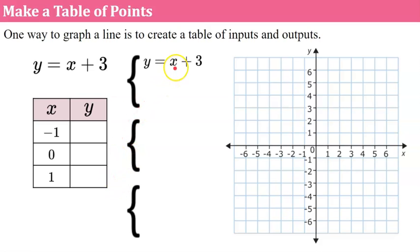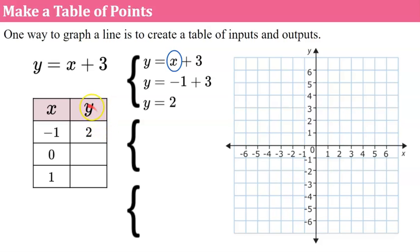We start with our equation and identify that we are putting in the input for x. We replace x with negative 1 and solve for y. When x is negative 1, negative 1 plus 3 is 2. So the corresponding value for y is 2. If you input x to be negative 1, the output is 2 — this is an ordered pair we will graph in a minute. Now we start with our equation again and put in 0 for x. Y equals 0 plus 3. When x is 0, y will equal 3. We put it in our table.